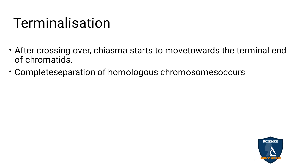The next stage is terminalization. After crossing over, the chiasma moves towards the terminal ends of the chromatids, and complete separation of the homologous chromosomes occurs. For example, like going from home to school and back — the terminus is the starting point. For cell division, the chromatids come from one point and return to that point after completing crossing over. This is called terminalization, and it is the end point of the crossing over process.